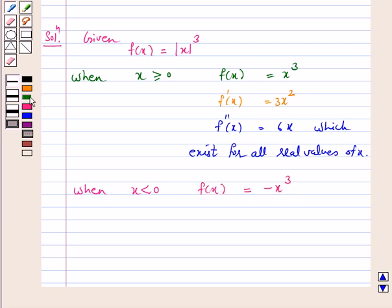So therefore, f dash x is equal to minus 3x square and f double dash x is equal to minus 6x, which also exists for all real values of x.